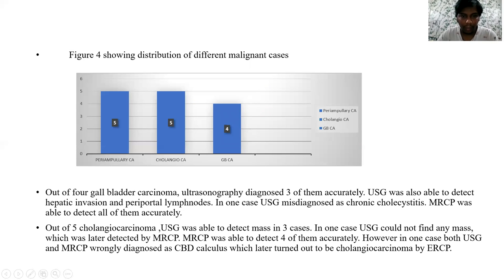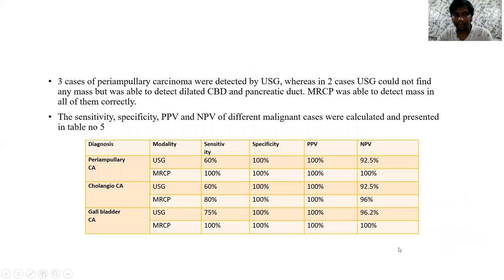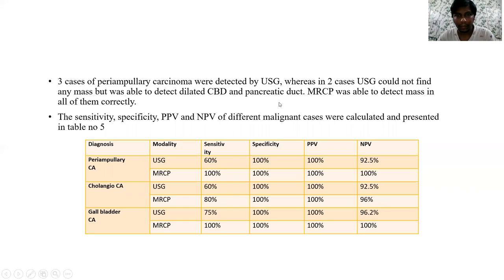Out of 5 cholangiocarcinoma cases, USG was able to detect masses in 3 cases. In one case, USG could not find any mass, which was later detected by MRCP. MRCP was able to detect 4 of them accurately. However, in one case, both USG and MRCP only diagnosed CBD calculus, which later turned out to be cholangiocarcinoma on ERCP. Three cases of periampullary carcinoma were detected by USG, whereas in two cases USG could not find any mass but was able to detect dilated CBD and pancreatic duct. MRCP was able to detect the mass in all of them correctly.